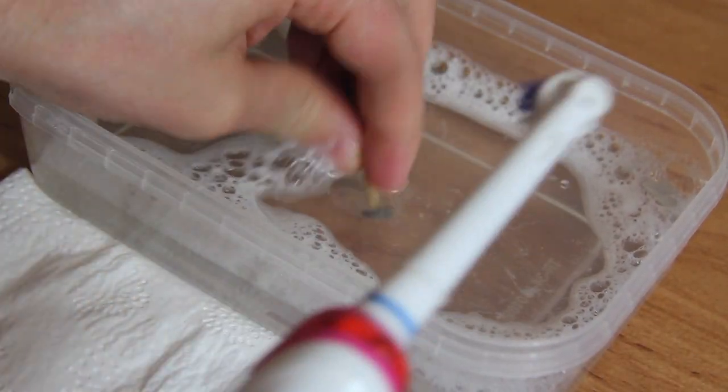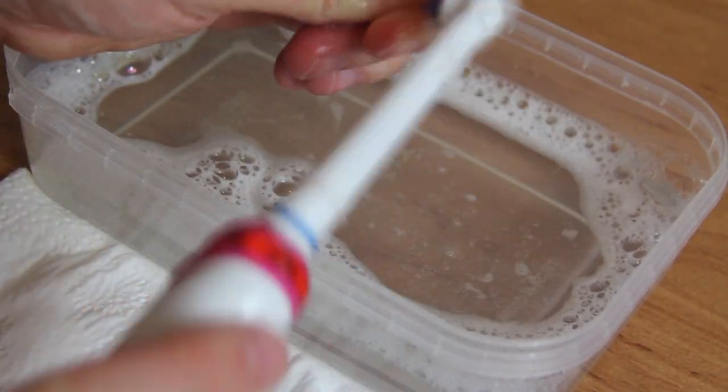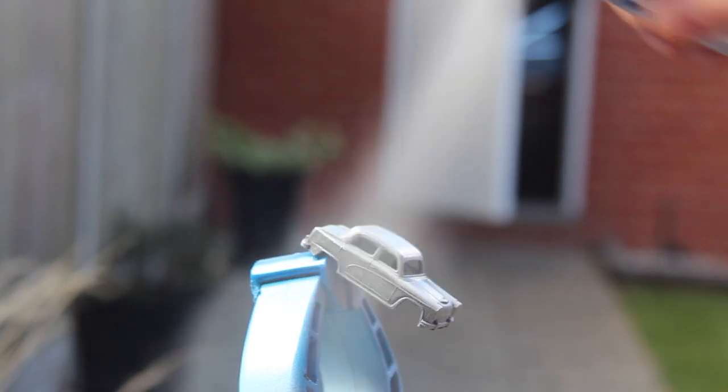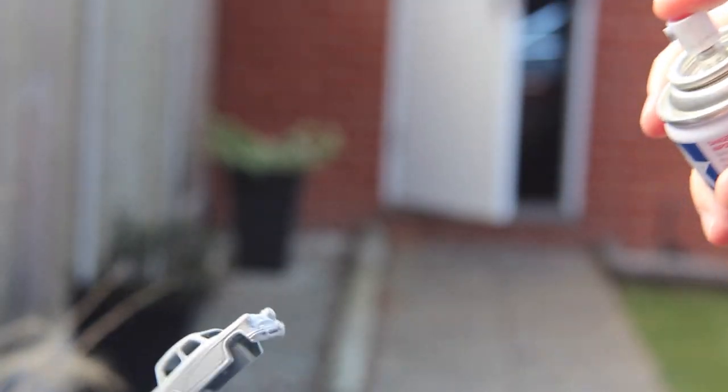After brushing up the wheels in some warm soapy water, I move on to giving the model a coat of primer, which will really be the acid test for my repairs on the front. This is the light grey Tamiya Fine Surface Primer.